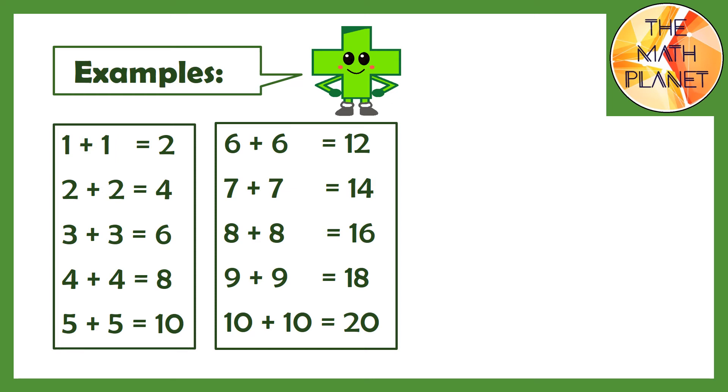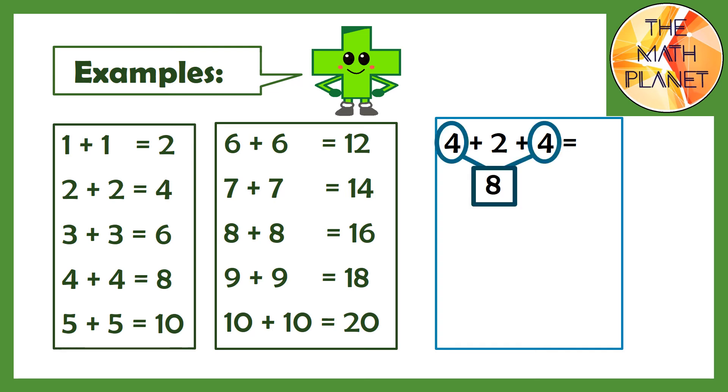Now let's move to the examples. If I have 4 plus 2 plus 4, how can you add these three numbers? You can start by adding the doubles. 4 plus 4 equals 8. And then you will add 2 more and the sum is 10.